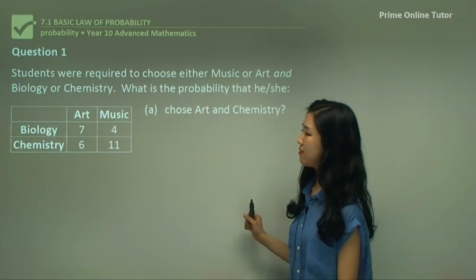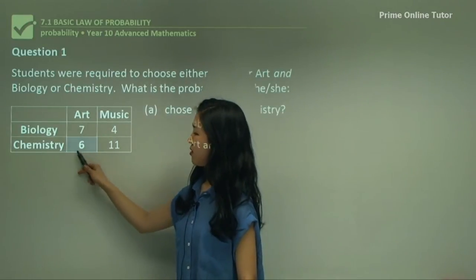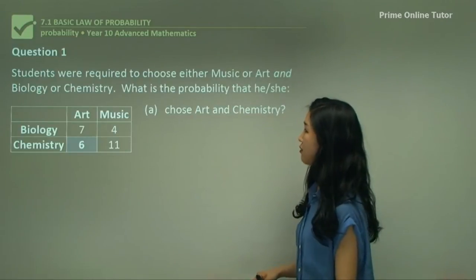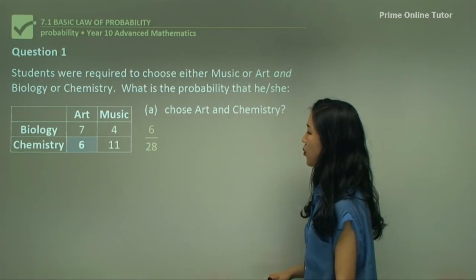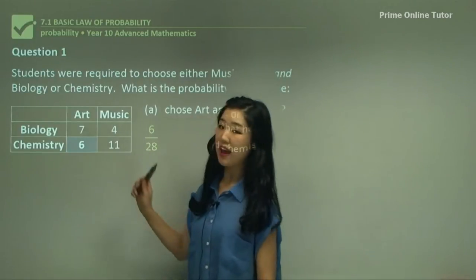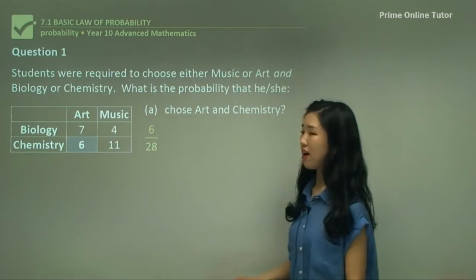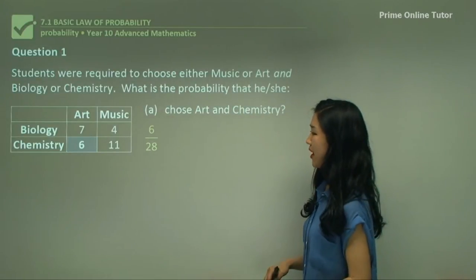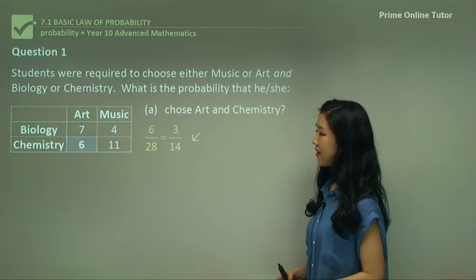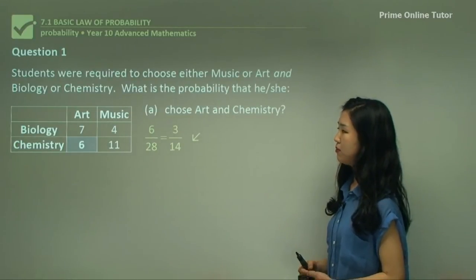Have a look at this. Art and chemistry — six people choose it. So out of 28 students, if you add all of these up you'll get 28 in total. Six out of the 28 choose art and chemistry. So just simplify it and you should get 3 over 14. So it's very simple.